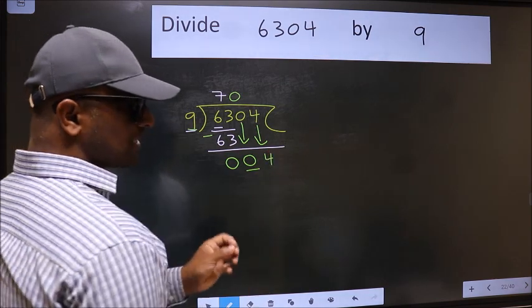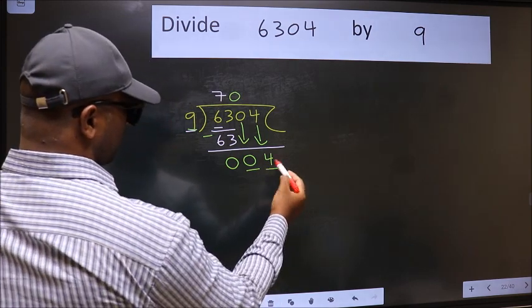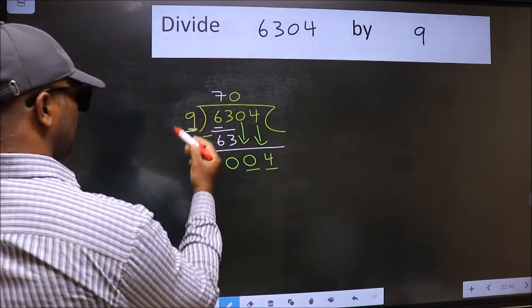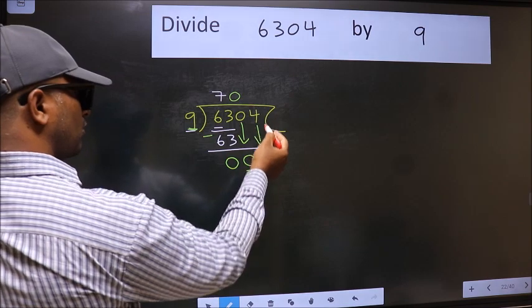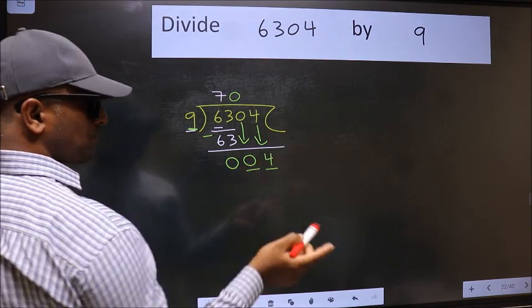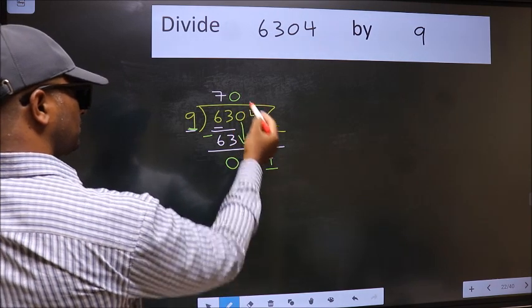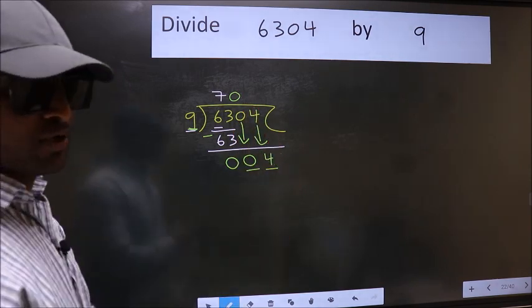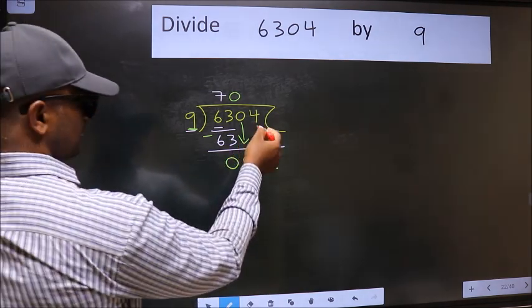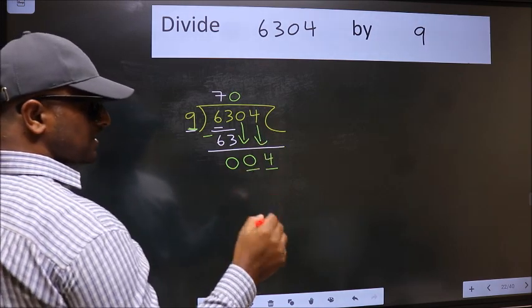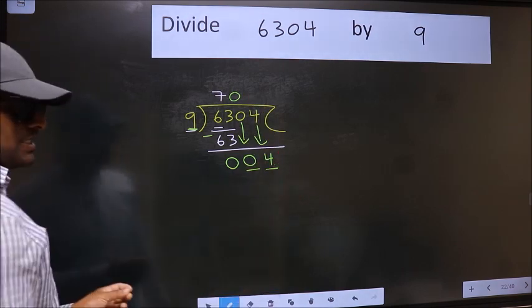After this step, the mistake happens. And the mistake is this. Here we have 4 and here 9. 4 is smaller than 9. And we don't have any more numbers to bring it down. So, what many do is they directly put dot, take 0. Which is wrong. Why is it wrong? Because just now you brought this number down, and in the same step, you want to put dot, take 0. Which is wrong.